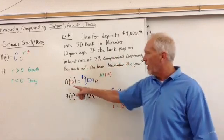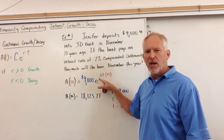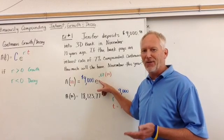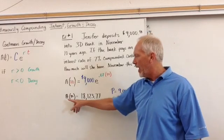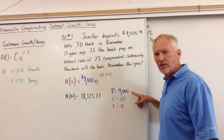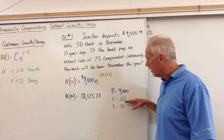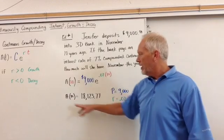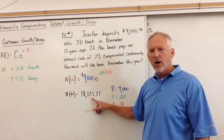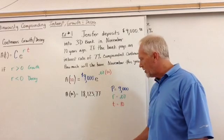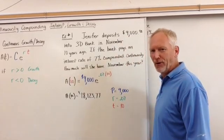How much is she going to have? We have A(10) is equal to principal amount $9,000 times e to the 7%, which is in decimal form 0.07, and then times 10. So P is $9,000, r is 0.07 or 7% but in decimal form, t is 10. Now A(10), once I put this in my calculator, I get $18,123.77. She's picked up quite a bit of money over the last 10 years. She's done well for herself.